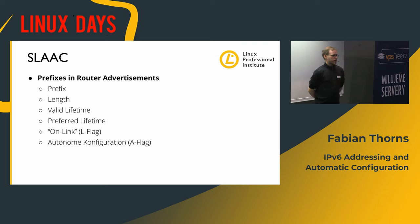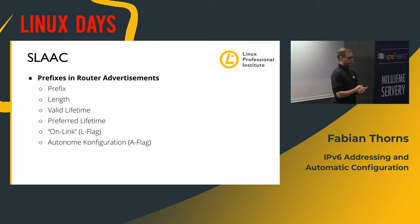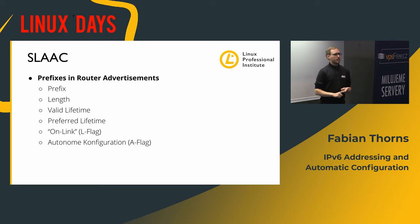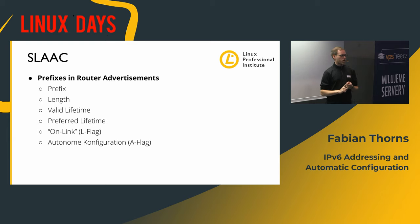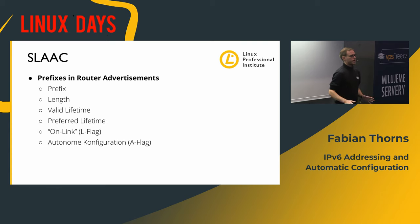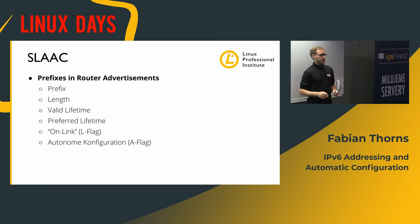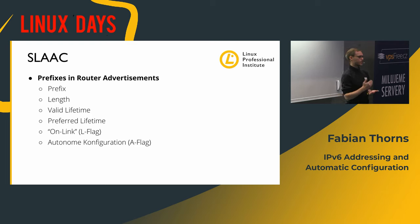The prefixes included in router advertisements have a length - we specify how long the prefix is for the individual route, what the valid lifetimes are, and whether it's on-link or not. Especially the on-link property is the only way you can automatically distribute a prefix to your clients. DHCP can only assign individual addresses, but it can tell your clients it's a /64 prefix - try to reach your neighbors directly. Router advertisements can do that.